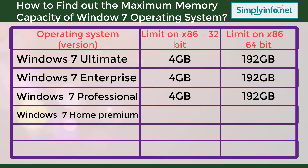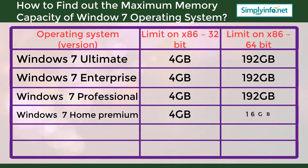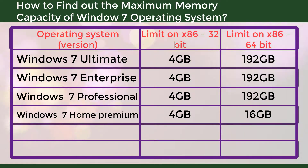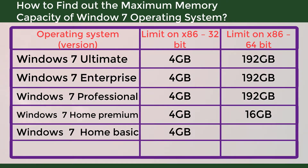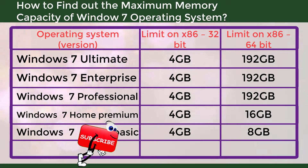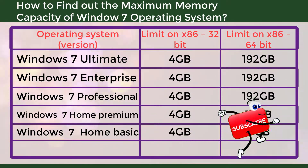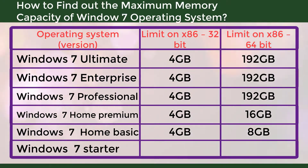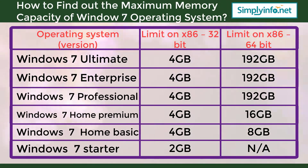For Windows 7 Home Premium, it is 4 GB on 32-bit and 16 GB on 64-bit. For Windows 7 Home Basic, it is 4 GB on 32-bit and 8 GB on 64-bit. For Windows 7 Starter, for 32-bit it is just 2 GB, and for 64-bit it is not applicable.